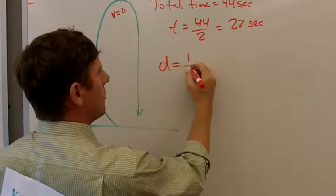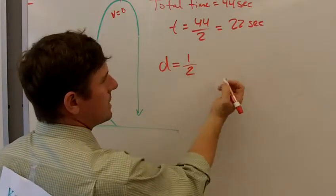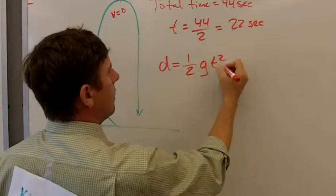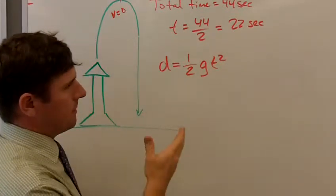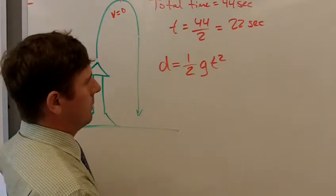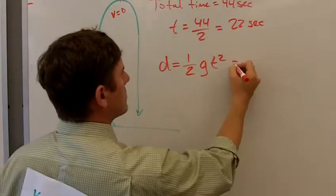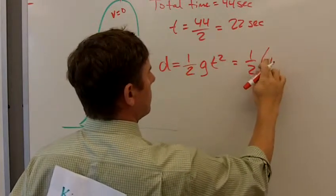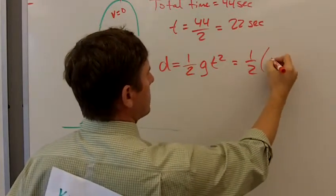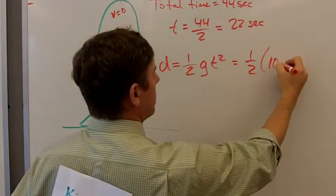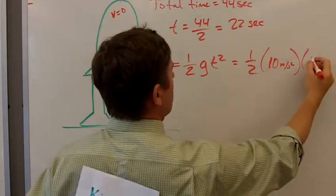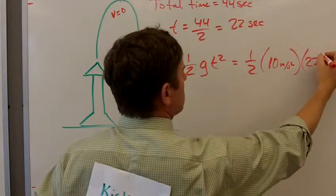So instead, we want to use the equation D equals 1 half AT squared. But since this is free fall, we're going to use G because that's a specific acceleration for things that are falling on Earth. And so in this case, 1 half times negative 10, although with distance we don't really want a negative distance. So I'm going to put positive 10 in there, meters per second squared. And then T squared, so 22 squared.